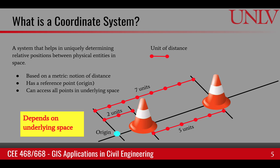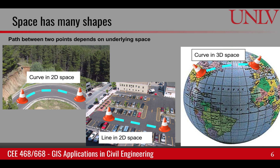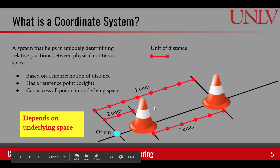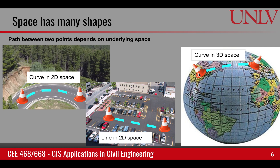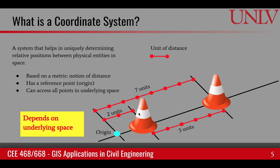But the question is, have we taken into consideration the underlying space? We have developed a system to help uniquely determine relative positions between physical entities in space, but what is the underlying space? For example, if these two cones were placed on a curve on a road, this is a curve in 2D space, so the straight line idea doesn't apply. It may apply for two cones in a parking lot, but if the two cones are in London and New York, again this is a curve in 3D space, so the idea of a straight line will not apply.